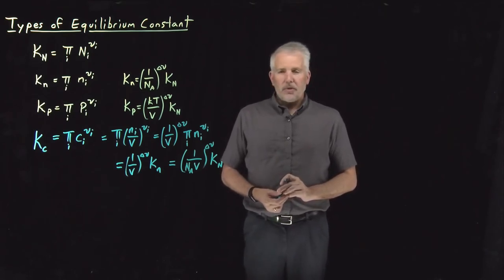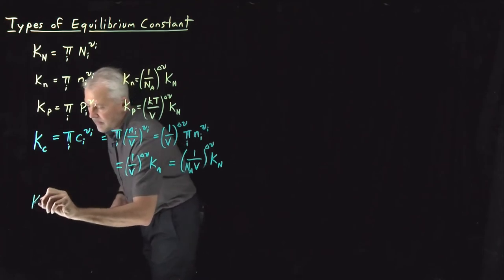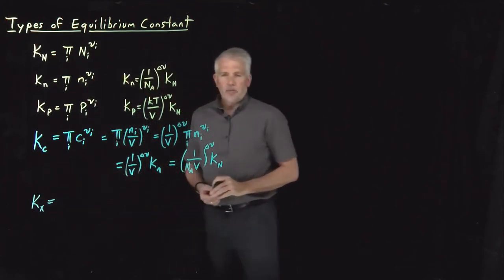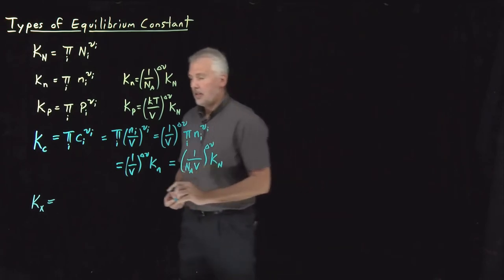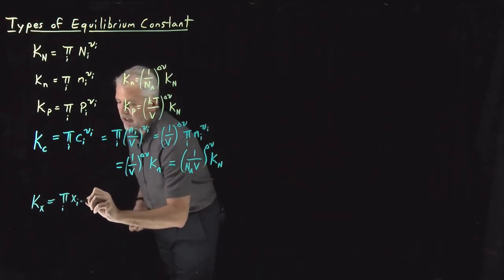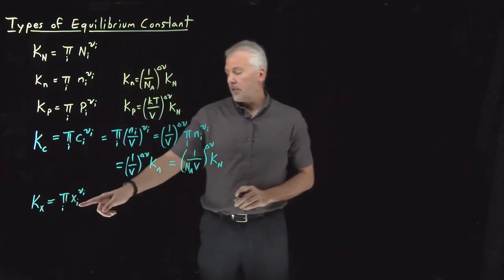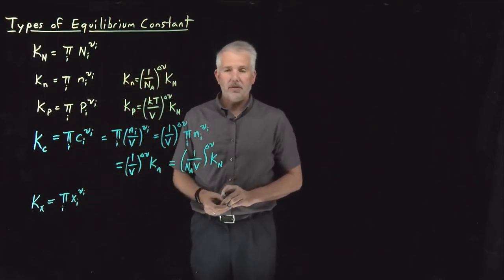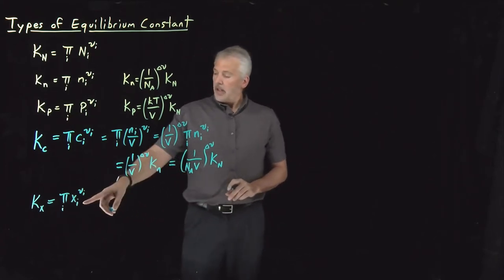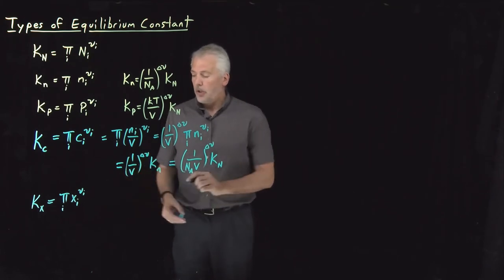Another common form of the equilibrium constant is written in terms of mole fractions. Mole fractions are another unit of concentration that can be convenient in solution or in the gas phase, and we write them as each species raised to its stoichiometric coefficient.